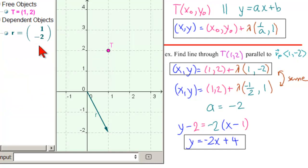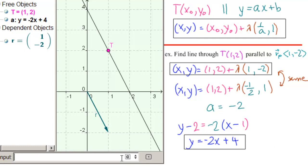So here we have GeoGebra. We've put in the point t equal to 1, 2. There it is. And the vector r equal to 1 minus 2. And now we're going to put in our equation of our line. So we're going to write in y equals minus 2x plus 4 and hit enter. And we can see that indeed it passes through t and is parallel to r.